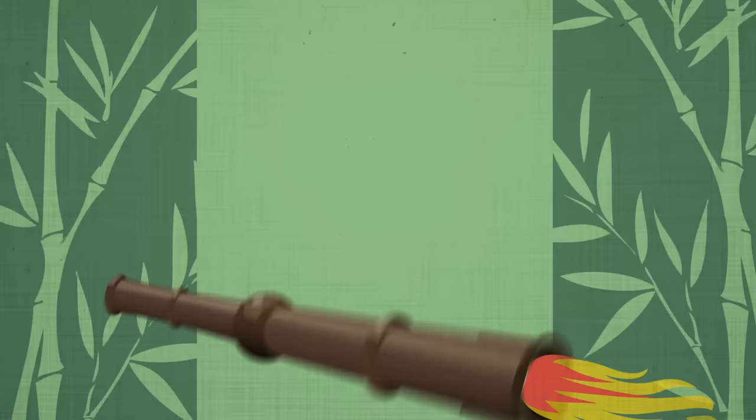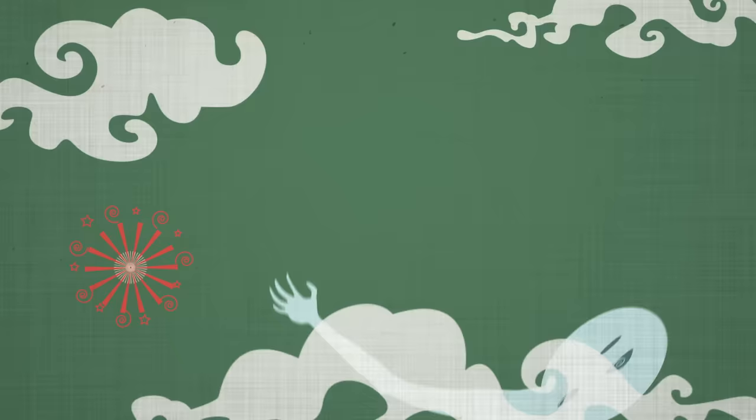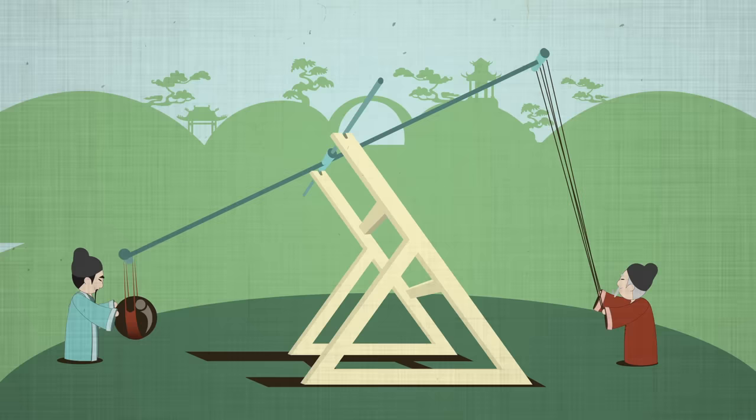But once they figured out the right proportions of ingredients to create a blast, they began using the powder even more, creating fireworks to keep evil spirits away and bombs to defend themselves against Mongol invaders.